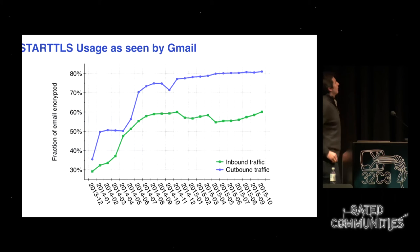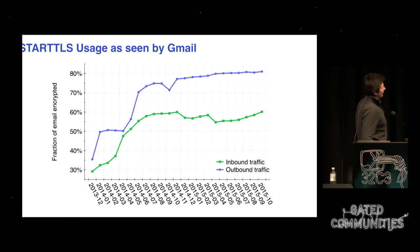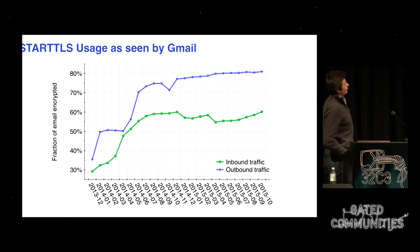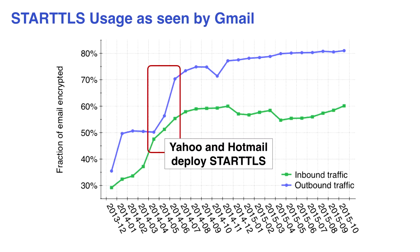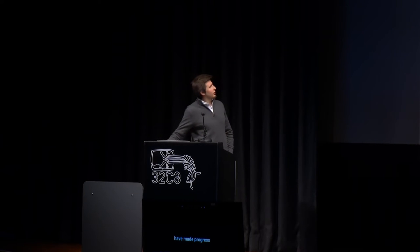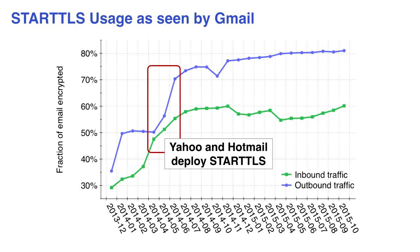Looking at data — the amount of messages in and out of Gmail that have used STARTTLS — we've made significant progress over the last two years. We're at the point where nearly 80% of outbound messages initiate STARTTLS connections, and just over 60% of inbound connections initiate STARTTLS. However, this was largely due to a couple of very large providers changing their policies. There's a very large jump in early 2014 when Yahoo and Hotmail deployed STARTTLS. Once you remove these large providers, growth is rather stagnant — we're slowly increasing but not making major leaps.